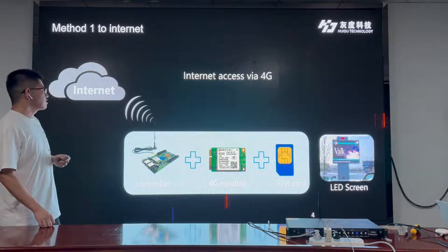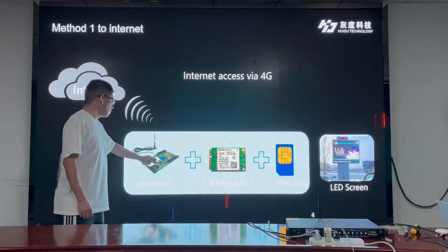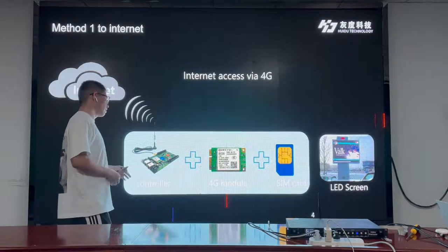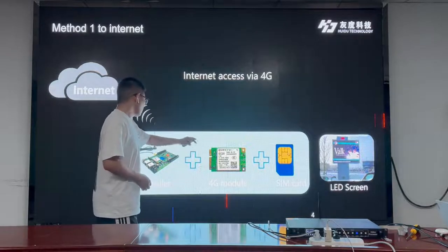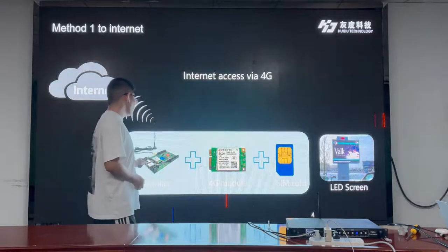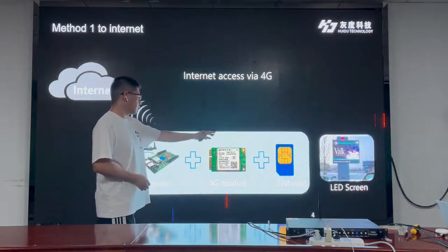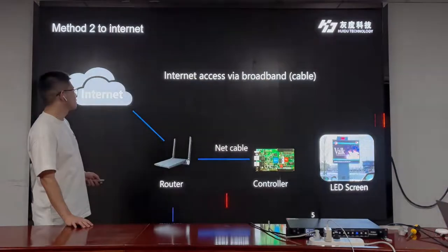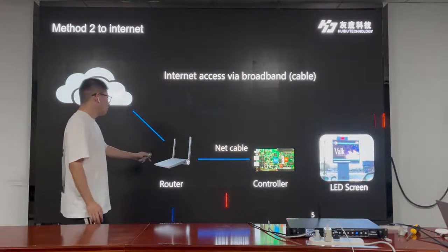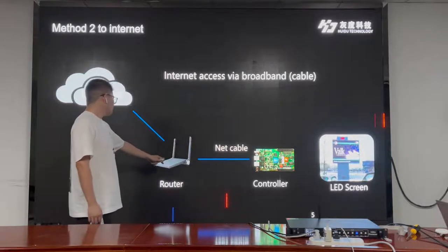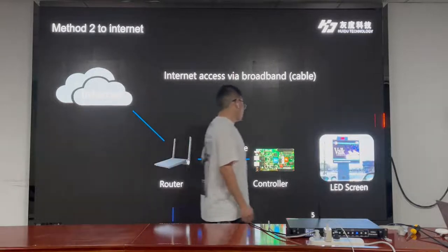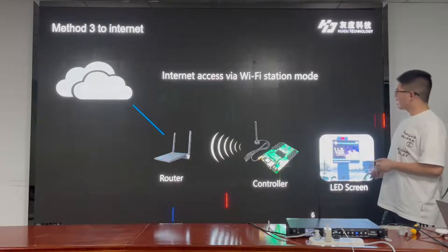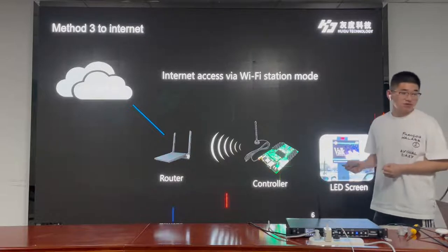For 4G internet access, we need a controller and a SIM card. Maybe also, if the screen is a bigger size, we also need a receiving card. And we need a SIM card for the data to send our video and other programs. We can also use a LAN cable to connect with the Wi-Fi router to make our LED screen access the internet. Wi-Fi wireless connection is also available to make our LED screen access the internet.